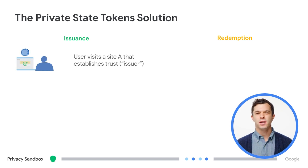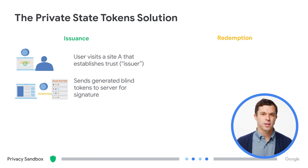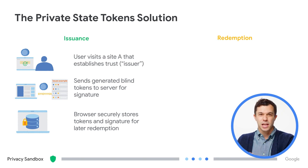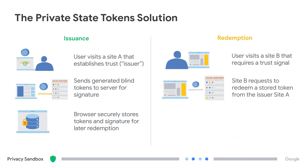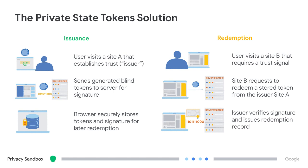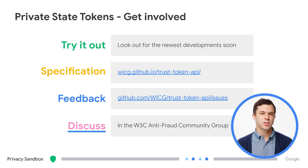When a user visits site A, that site runs its own analytics to validate the user and determine if they are a bot or not. Site A sends a token to the server for signature that encodes that information — basically a zero or a one. The browser securely stores that token, which can then be redeemed later. If a user visits site B where it might be unclear if the user is trusted, site B can request to redeem the token issued from site A. The issuer verifies the signature and issues a redemption record so site B can see whether that value was a zero or a one. We welcome your discussion on private state tokens in GitHub and in the W3C's anti-fraud community group.